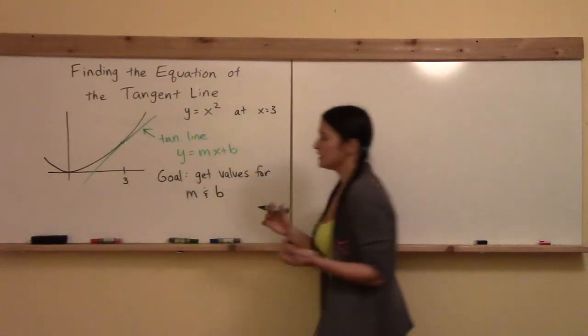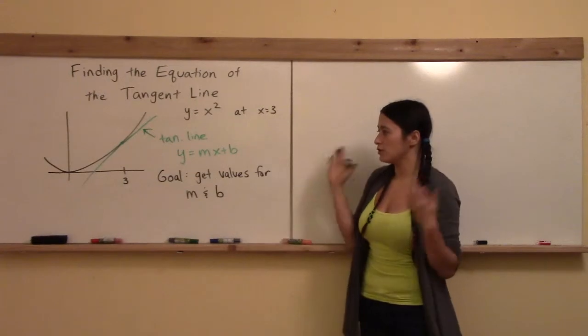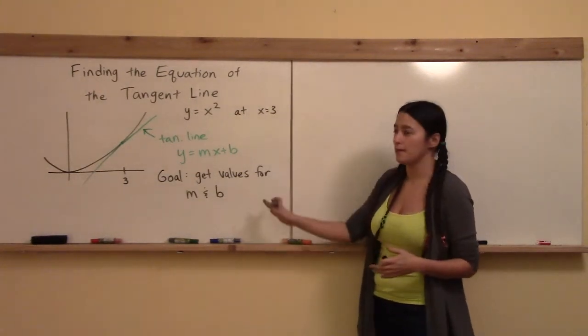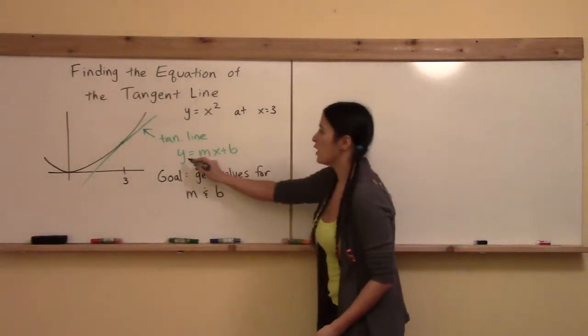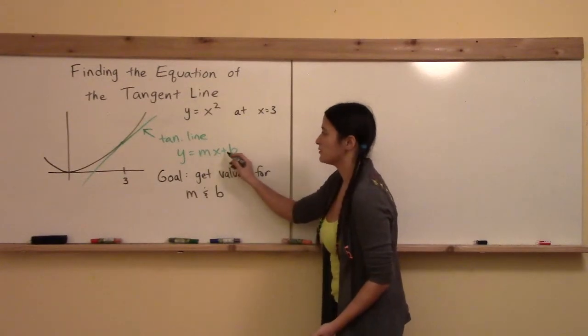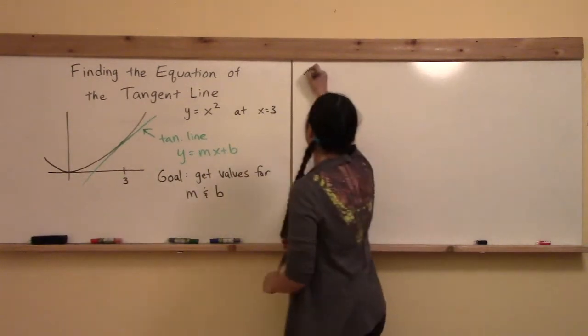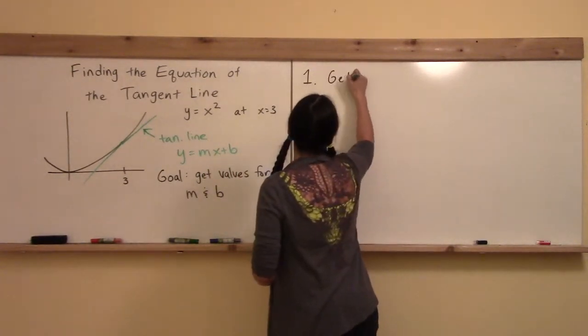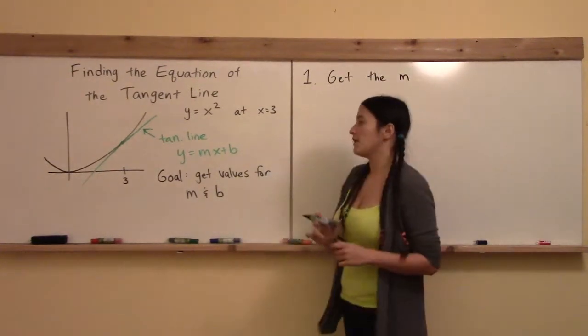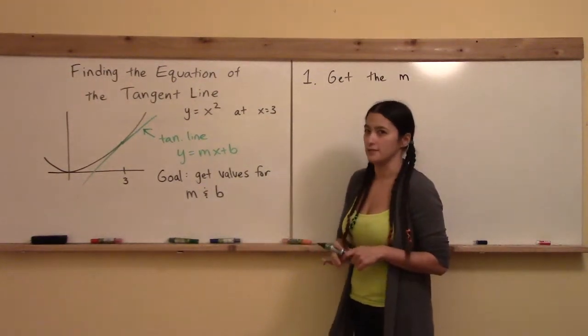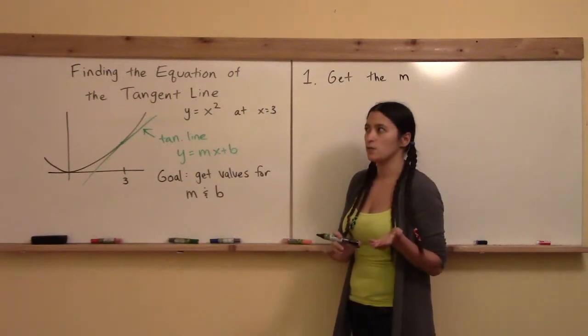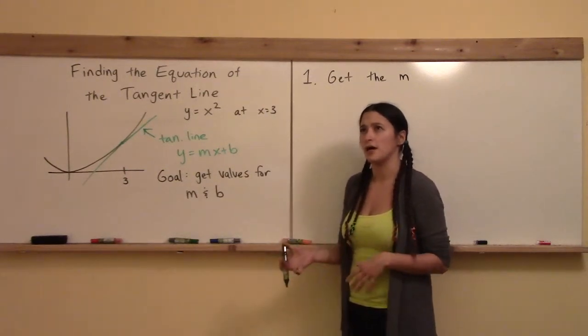All right, so let's call this a two-step process. We're going to have a goal where we need to get the values for the m and the b, and the answer will be y is equal to number x plus number. Okay, so step one, we're going to get the m. Now, how do you think I'm going to find the slope of the tangent line? What was I saying was the slope of the tangent line?